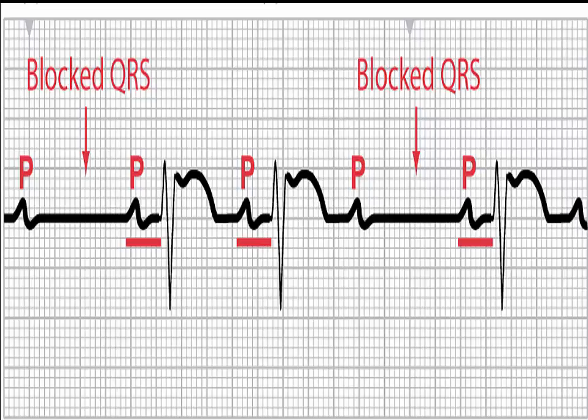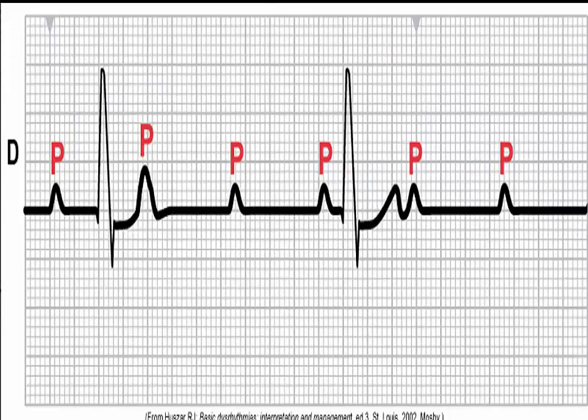Keep in mind that if atropine is given for second degree heart block type 2, it may put the patient into third degree heart block. Third degree heart block, also known as complete heart block, occurs when the electrical impulse from the SA node is not conducted to the ventricles. An accessory pacemaker in the ventricles will activate a ventricular contraction, called an escape rhythm. The PR interval will appear variable because there is no relationship between the P waves and the QRS complexes.